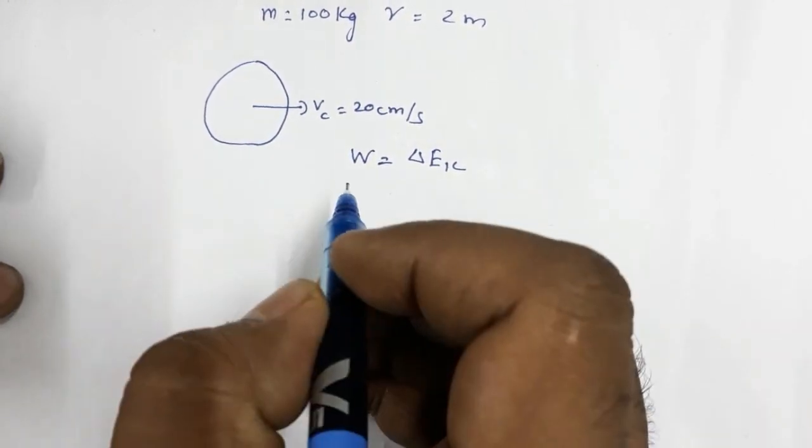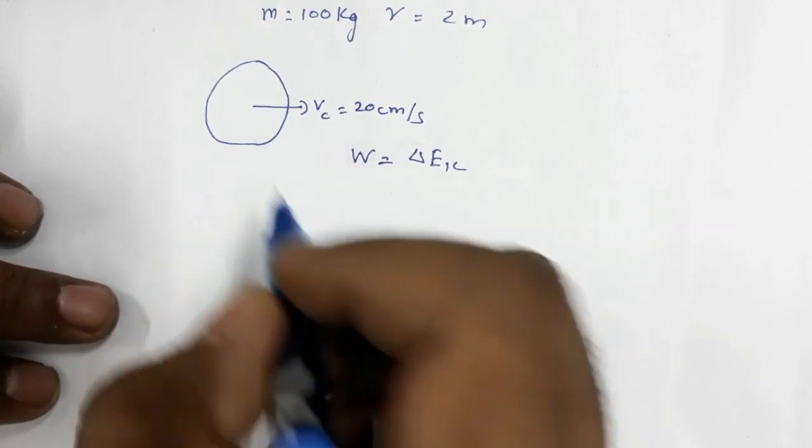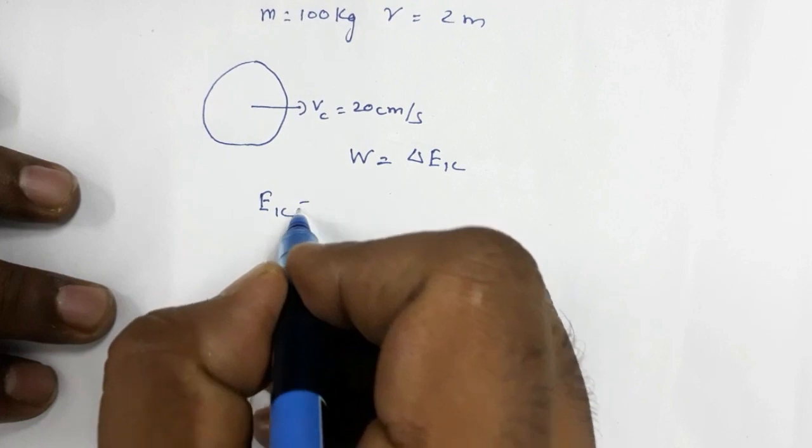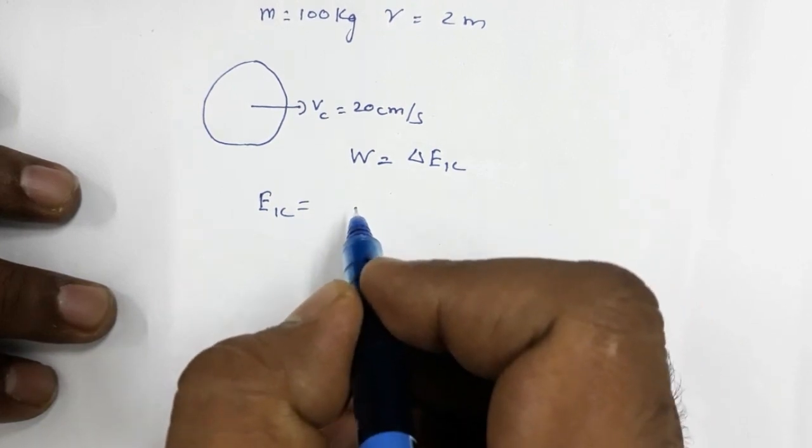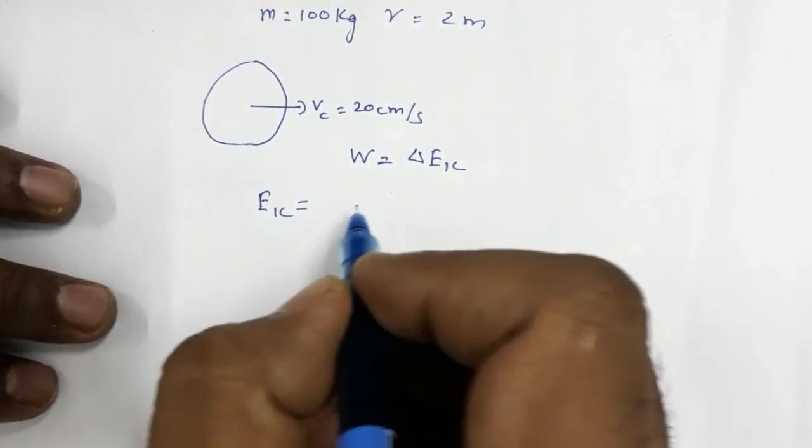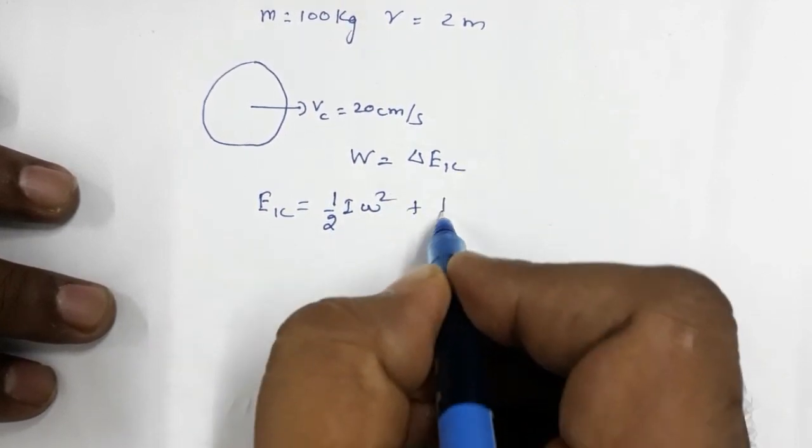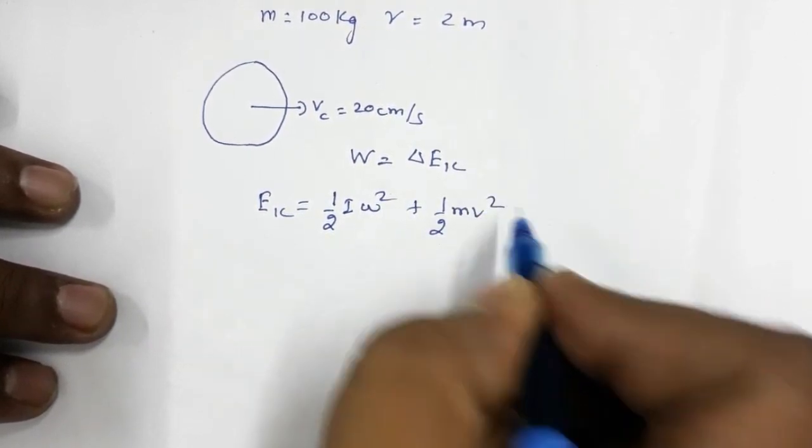Now kinetic energy here, since it is rolling, will be the sum of two kinetic energies: kinetic energy of rotation plus kinetic energy of translation. Kinetic energy of rotation is half I omega squared. Kinetic energy of translation is half mv squared.